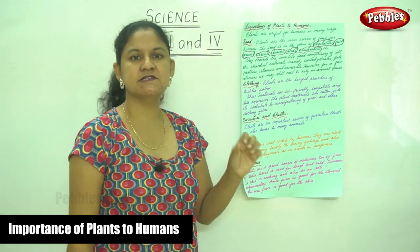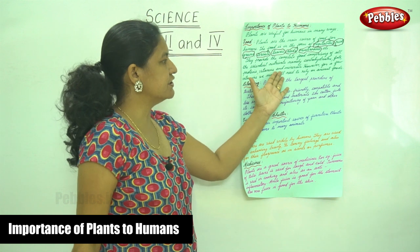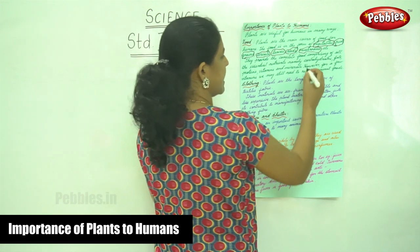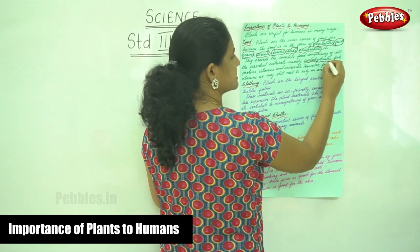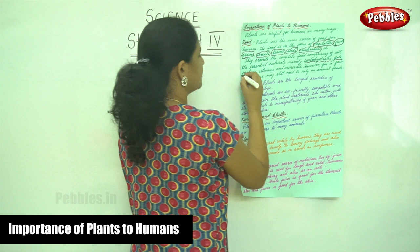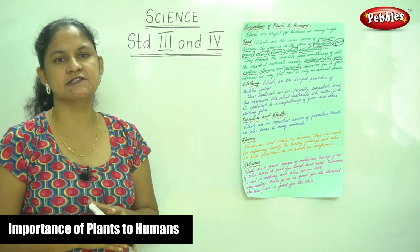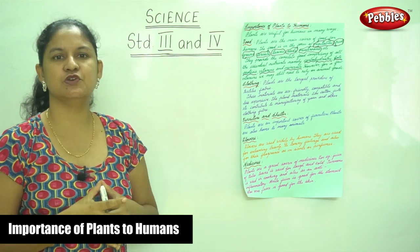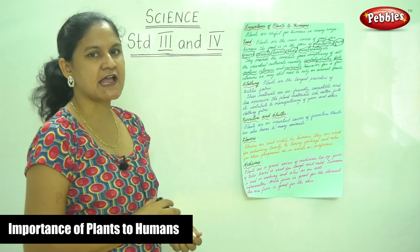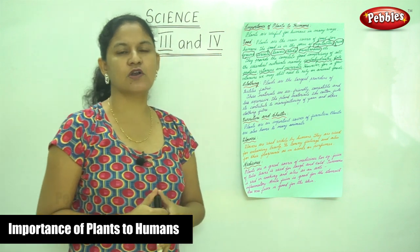Plants provide a balanced diet — a complete food comprising all the essential nutrients, namely carbohydrates, fats, vitamins, proteins, and minerals. These nutrients are provided by plants for humans to consume. However, for a few vitamins we may still need to rely on animal food.